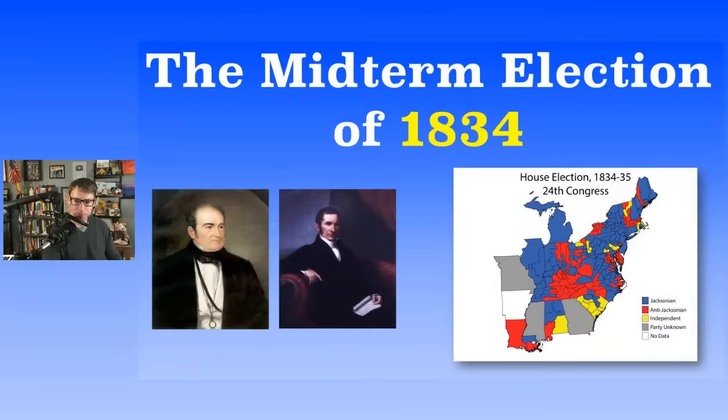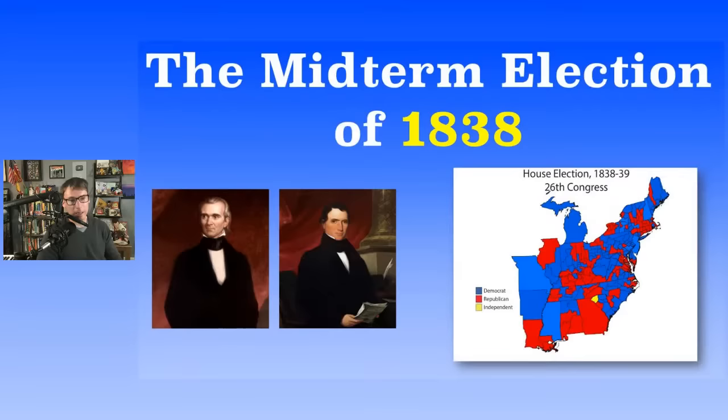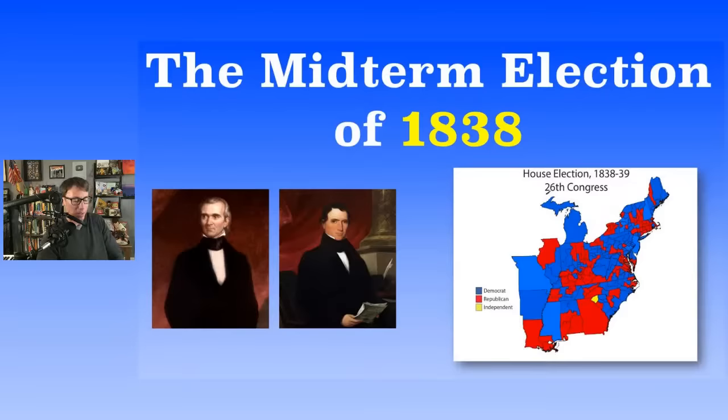Jump ahead to the midterm election of 1838. You may recognize the guy on the left — that's a future president, James Polk. At this time he was Speaker of the House, very influential in that role. On the right is William R. King, best known perhaps as being pretty good friends with future president James Buchanan — some speculate they may have been lovers, but there's no really good evidence. King was the president pro tempore in 1838.